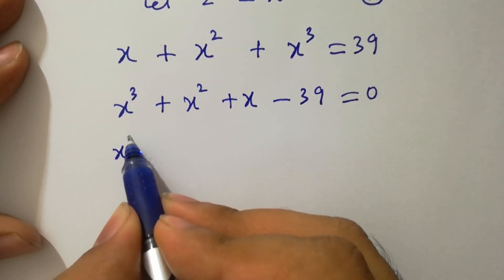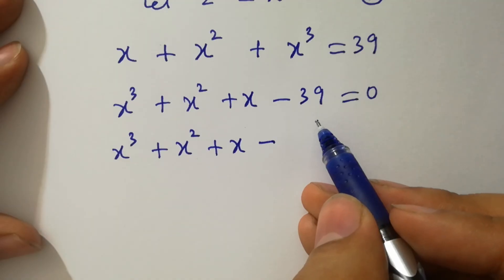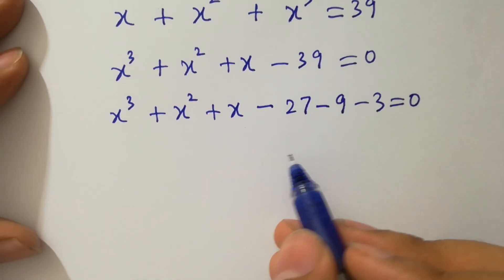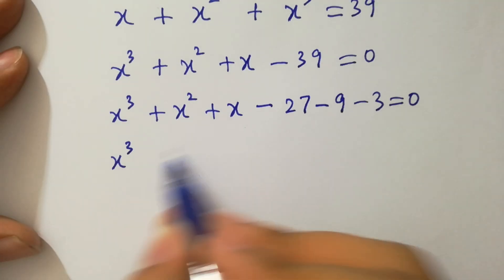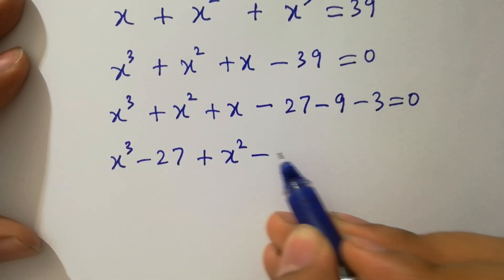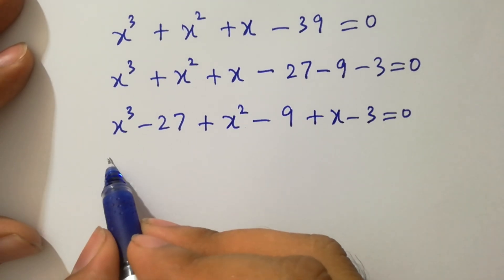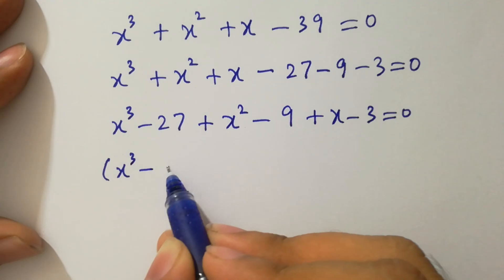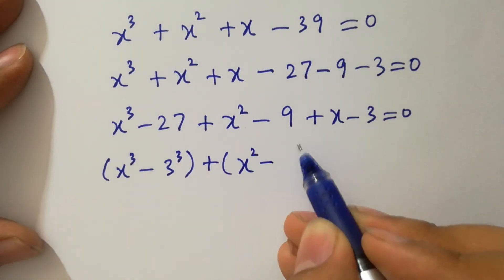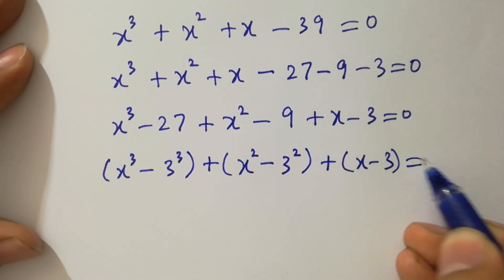It can be written as x cubed plus x squared plus x minus 39 equals 0. We observe that x equals 3 is a root since minus 27 minus 9 minus 3 equals 0. So we factor: x cubed minus 27, plus x squared minus 9, plus x minus 3 equals 0.